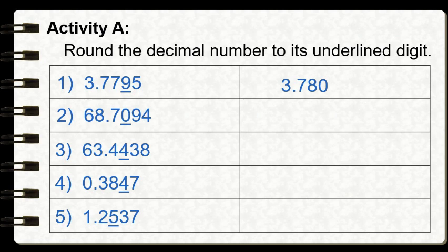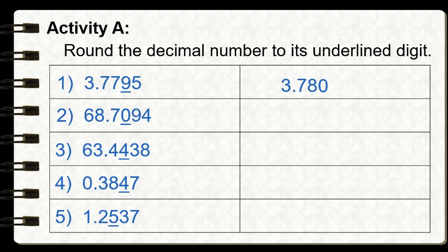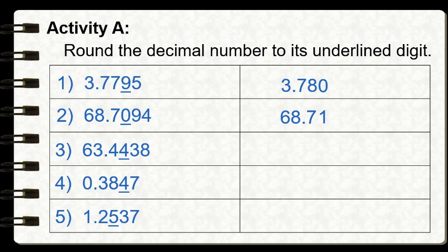Number two: sixty-eight and seven thousand ninety-four ten-thousandths, with the underlined digit zero occupying the hundredths place. The digit to the right of our rounding place is nine. Since nine is greater than five, we round up — one plus zero equals one. We copy all digits to the left: sixty-eight and seven tenths. We eliminate the remaining digits to the right — ninety-four — and our answer is sixty-eight and seventy-one hundredths.